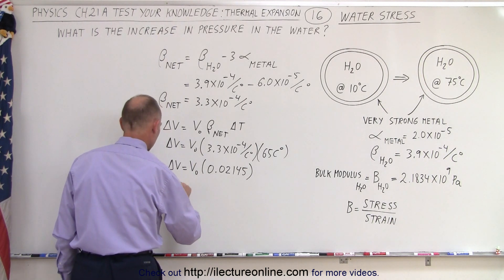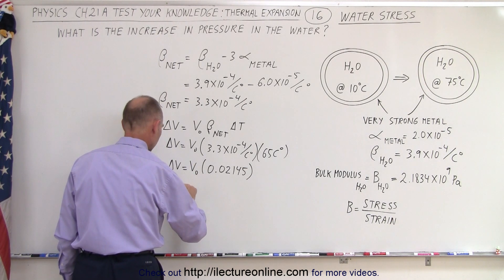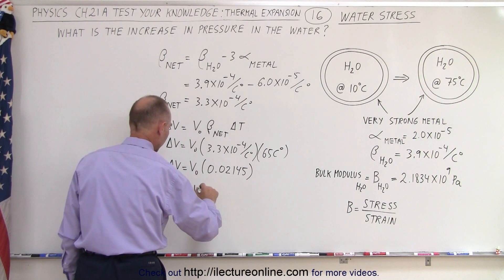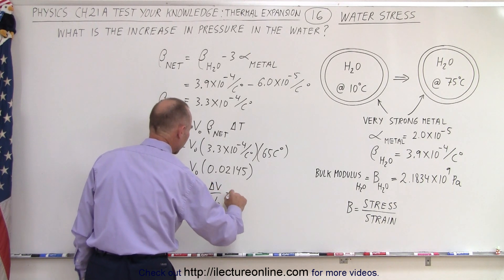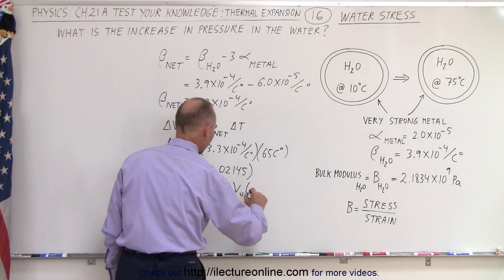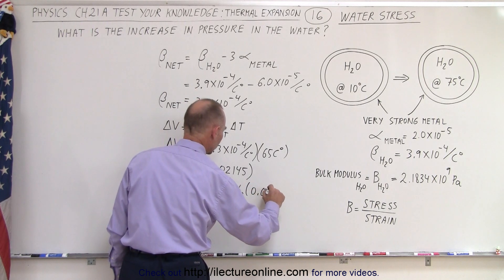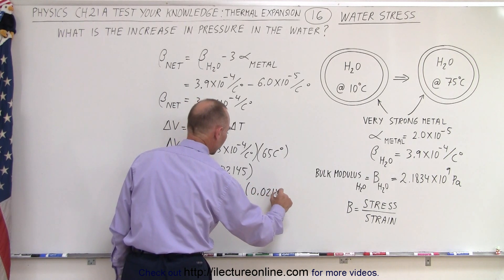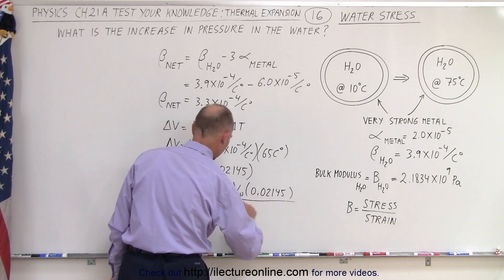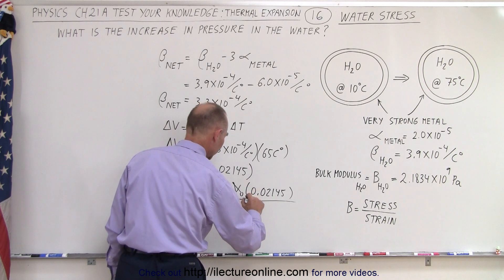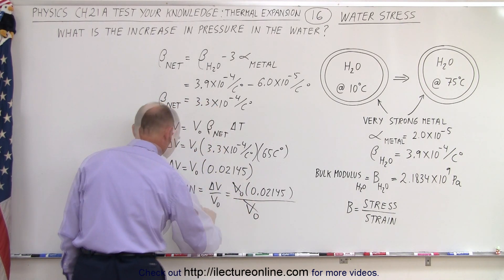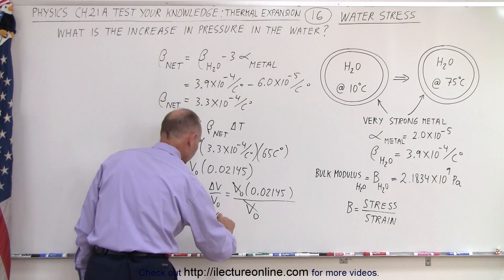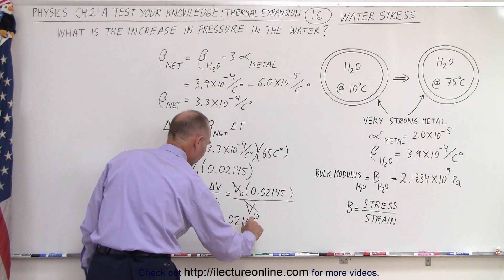The strain, which by definition is the change in volume over the original volume, is going to be equal to V-initial times 0.02145 divided by V-initial. The V-initials cancel out, and the strain is equal to 0.02145.